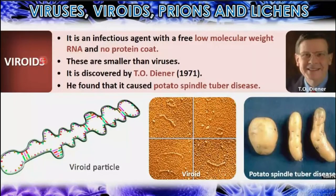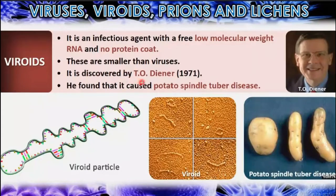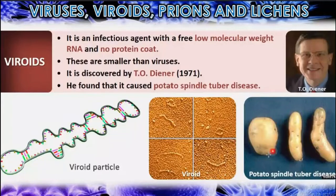Next are viroids. A viroid is an infectious agent with a free, low molecular weight RNA and no protein coat. They are smaller than viruses and were discovered by T.O. Diener in 1971. He found that viroids caused potato spindle tuber disease.